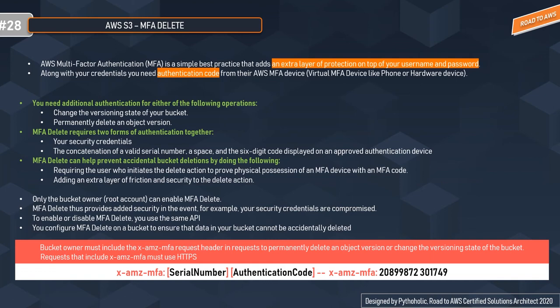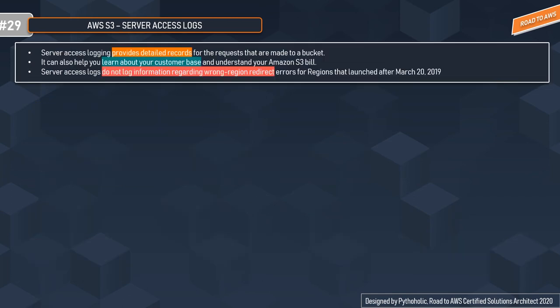Only the bucket owner or root account can enable MFA delete. MFA delete adds security in the event your security credentials are compromised, since the attacker would also need the MFA code. You can use the same API to enable or disable MFA delete. Bucket owners must include the x-amz-mfa request header — containing the device serial number and the MFA code — in requests to permanently delete an object version or change the versioning state of a bucket.